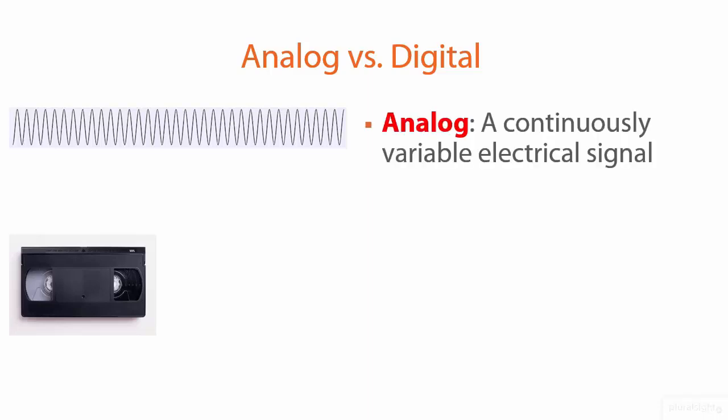Analog versus digital signaling. Analog is the old school where you have the video signal — the electrical signal — represented as a wave with intermediate values. Nowadays, since we've moved past CRT and in most cases past the VGA standard, we're dealing with digital video signals. But you still see analog, for instance, if you have old video on 8mm reels or VHS cassettes that you want to digitize by importing into your computer.